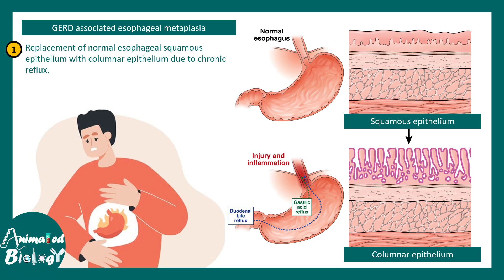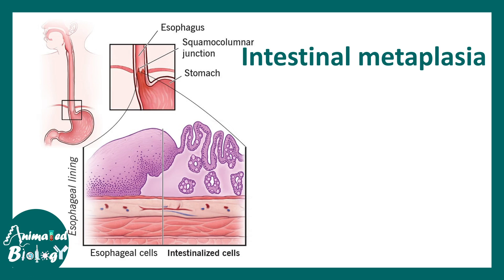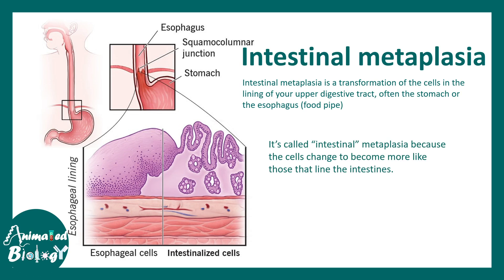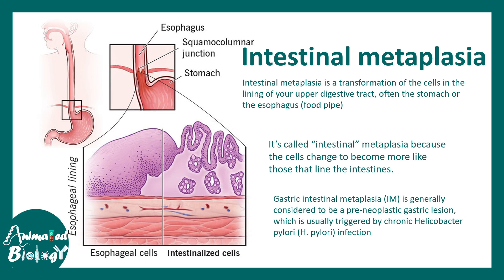It is important to note that sometimes metaplasia could also be a risk factor for cancer. Intestinal metaplasia is a transformation of the cell lining of the upper digestive tract into a stomach or intestine-like fate — the cells change to become more intestine-like. Sometimes H. pylori infection is a trigger for this kind of non-neoplastic change.